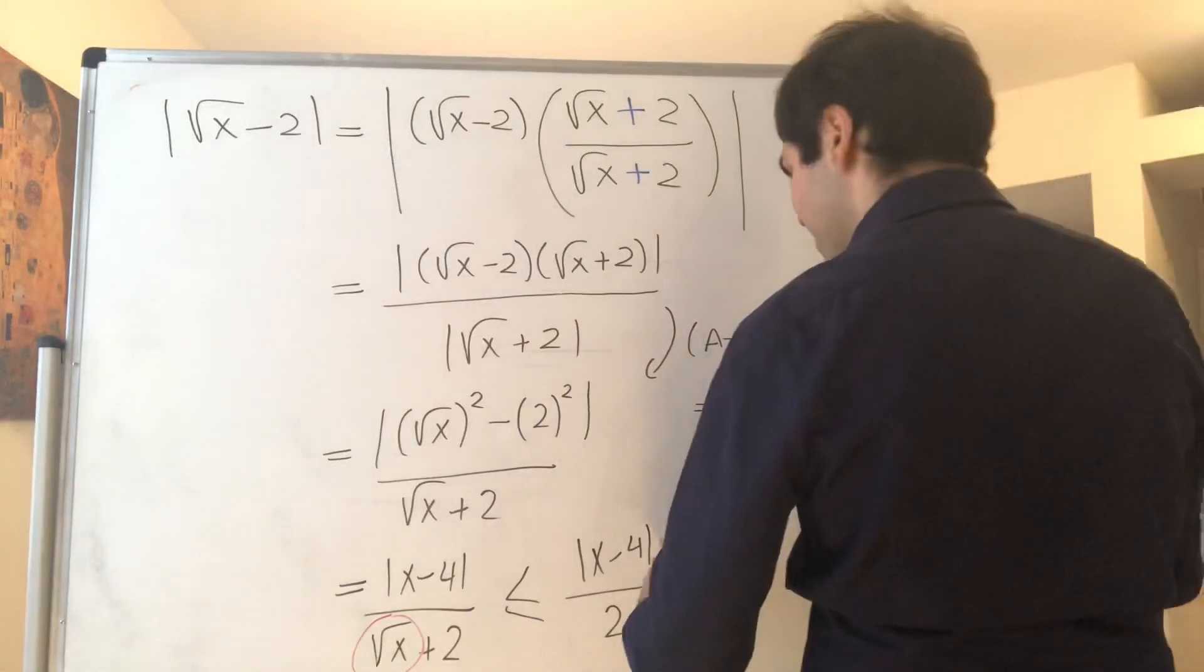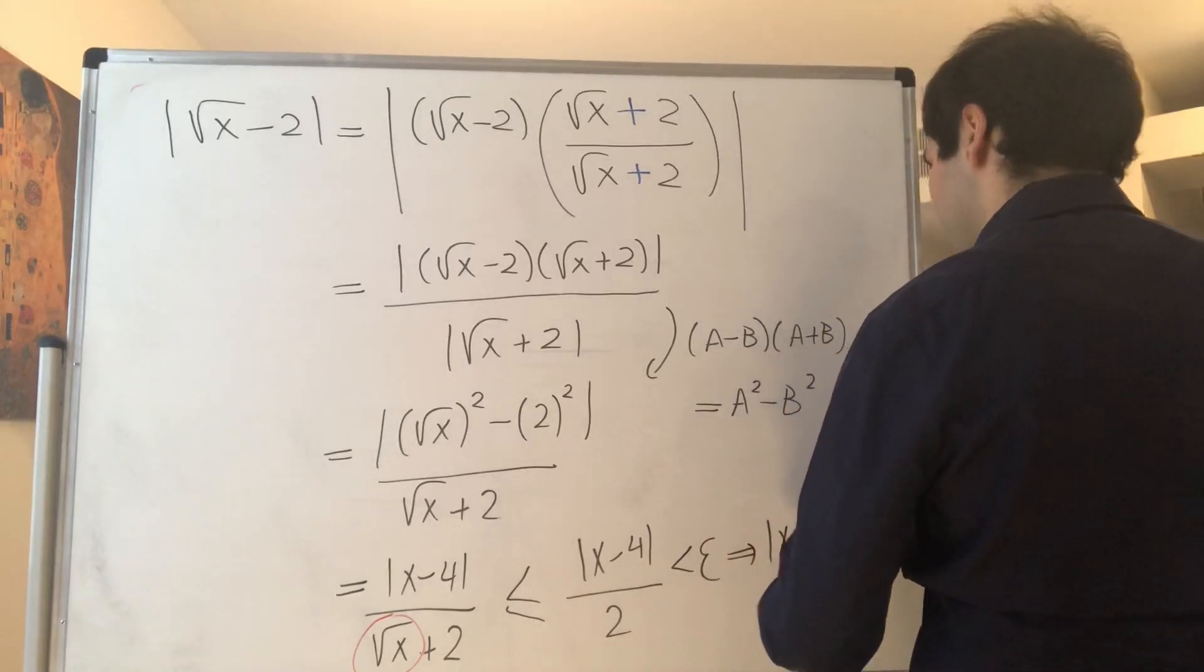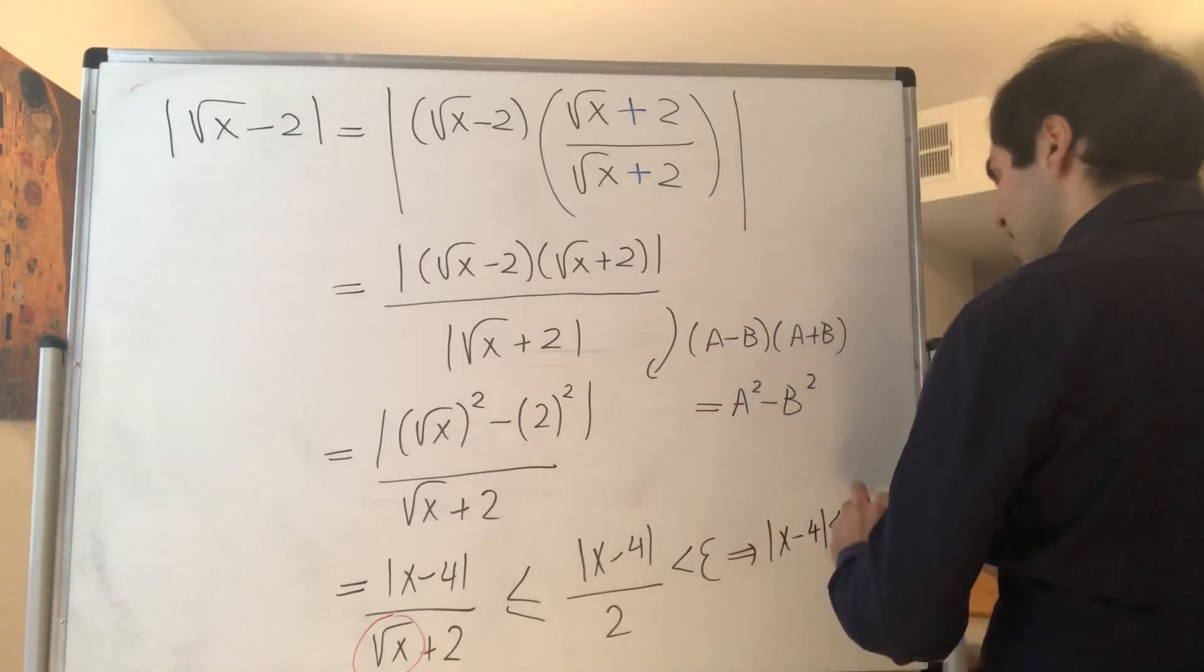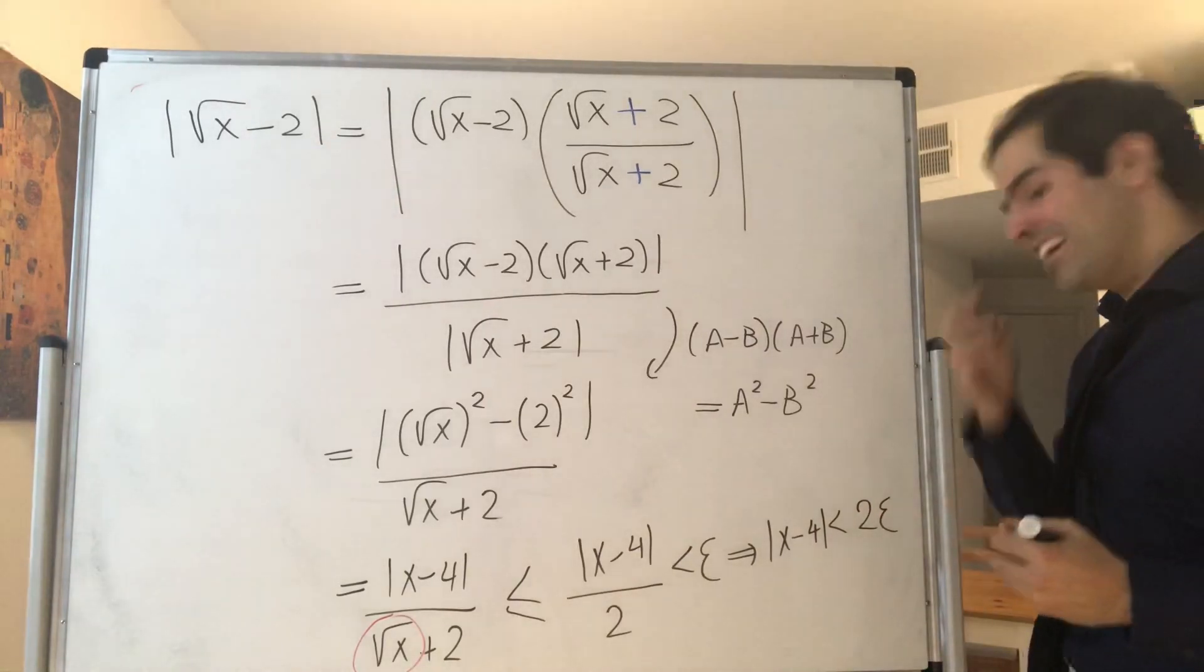And remember, you want to set this less than epsilon, which finally gives us our delta. So, x minus 4 is less than 2 epsilon. So, we found Nemo, and now we can attack.